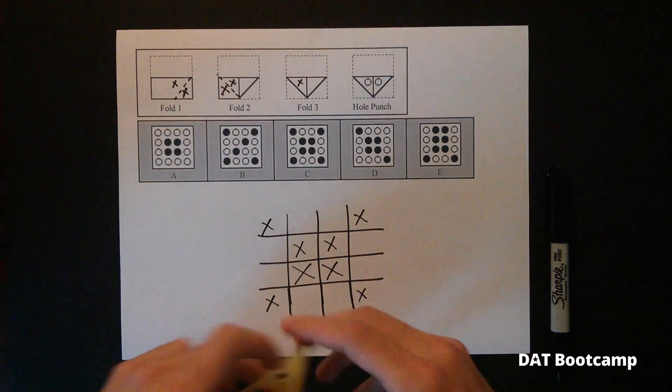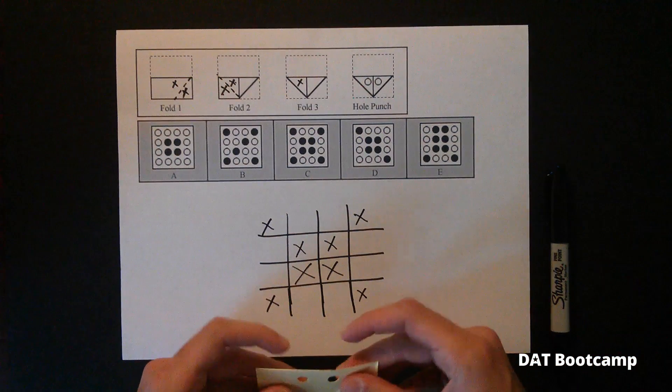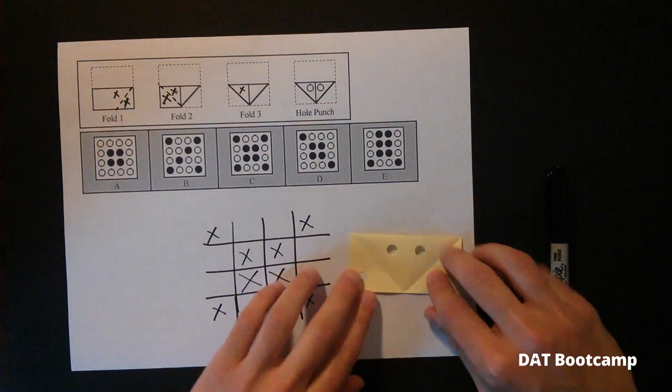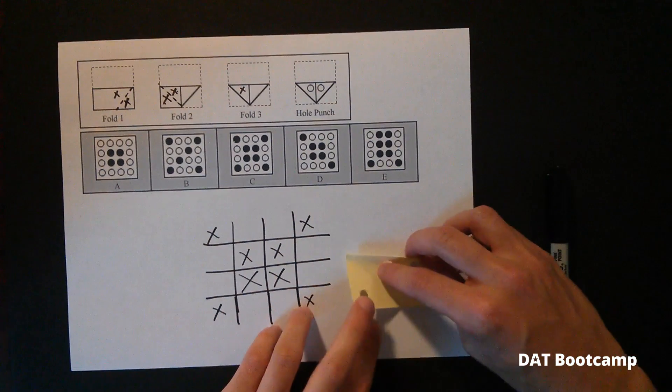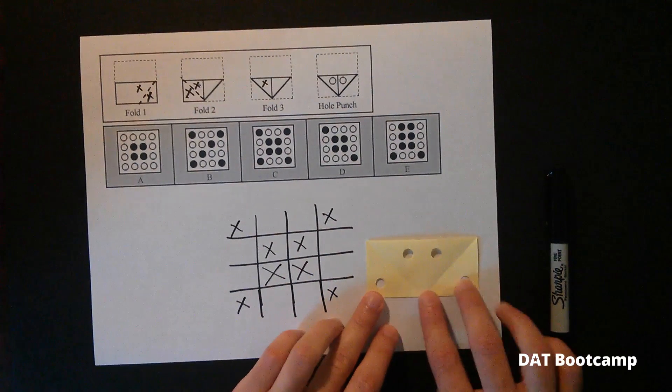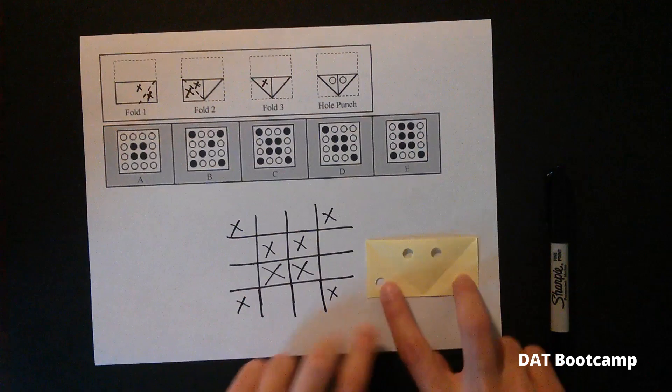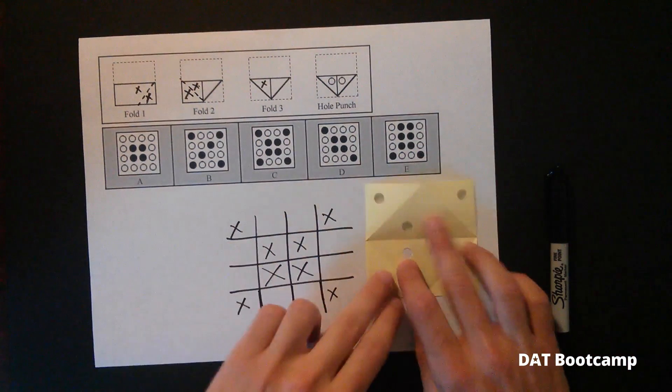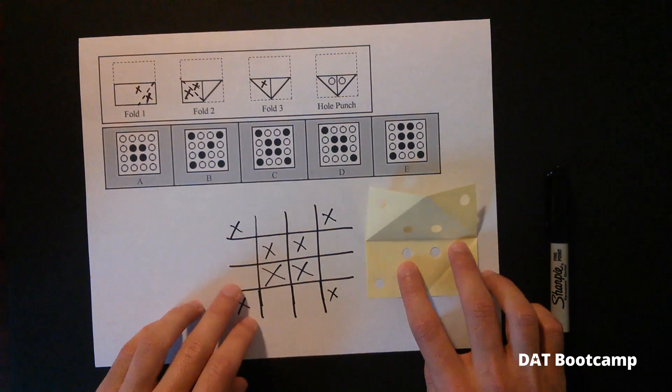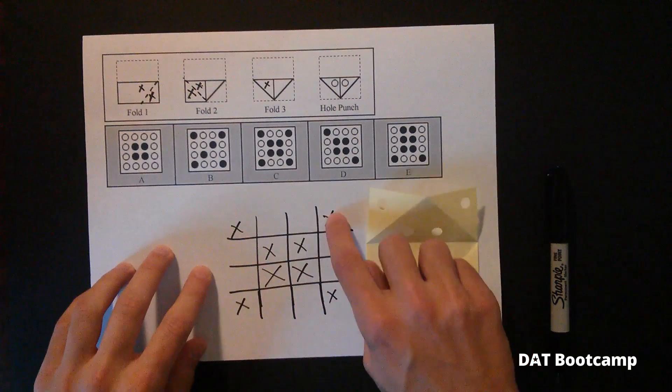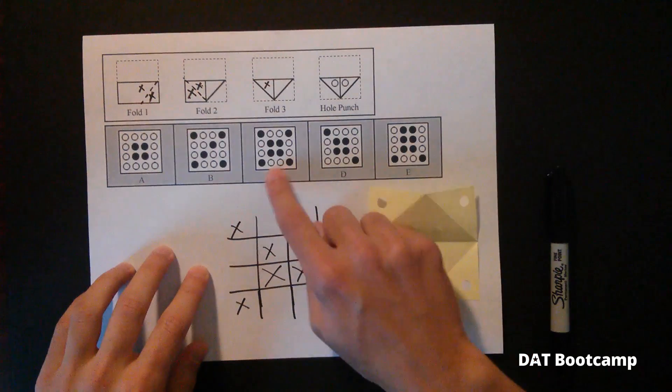That section, that step I just did corresponded to this section, this step. You saw that we had a fold here, here, here, and here corresponding to these four holes. And we just simply unfolded it. It's the same method, just you're able to do this on the DAT. We can see that this grid matches up with answer choice C.